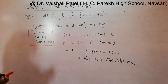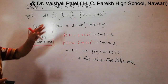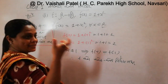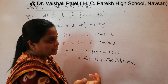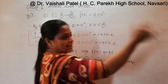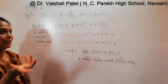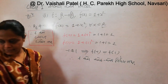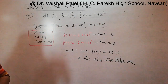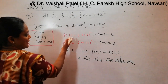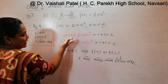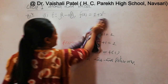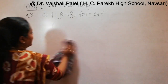F from R to R, f of x equals 1 plus x squared. We have a short trick: x squared is greater than or equal to 0. So we have to work with 1 minus x squared.